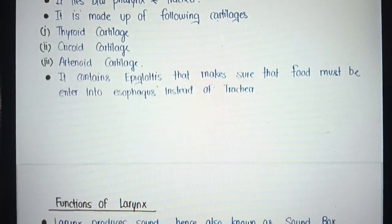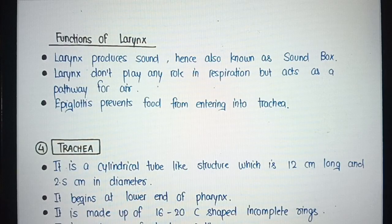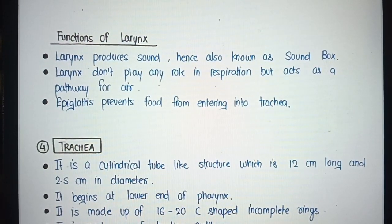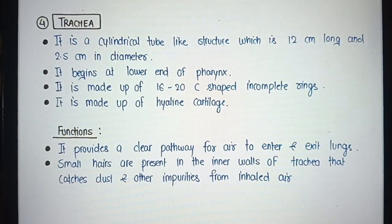Trachea. It is a cylindrical tube-like structure which is 12 cm long and 2.5 cm in diameter. It begins at the lower end of the pharynx. It is made up of 16 to 20 C-shaped incomplete rings made of hyaline cartilage.